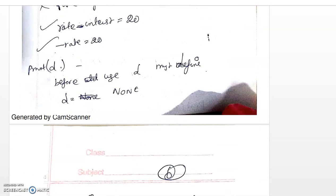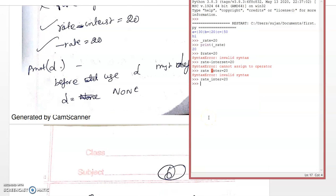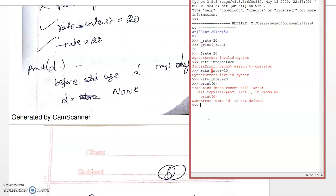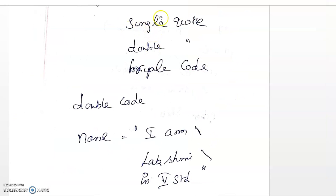Before using any variable you should assign some value. Without assigning, printing a variable will show an error. You can assign the special value None to a variable — it means no value. Printing a None variable won't throw an error, but it won't print any value either.